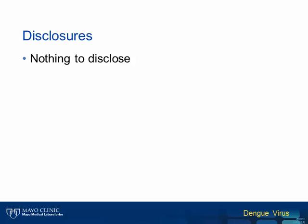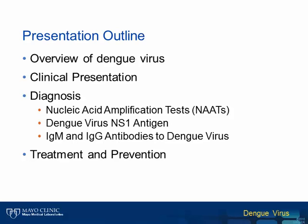Before we begin, I should mention that I have no financial or other conflicts to disclose. During this presentation, I'll provide some background on dengue virus and briefly review the clinical manifestations of infection. I'll next focus on the available diagnostic methodologies, including testing by nucleic acid amplification tests, or NATs, and evaluation of the serologic response to infection by detection of both antigen from and antibodies to dengue virus. Finally, I'll conclude with a brief discussion of treatment and prevention of dengue virus infection.